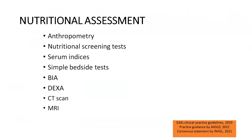Coming to the main part — nutritional assessment — we will deal with it in the following order: first, anthropometry, which includes simple tests; then nutritional screening tests; then serum indices; then simple bedside tests for assessment of malnutrition, sarcopenia, and frailty; and then some advanced investigations like bioimpedance analysis, DEXA scan, CT and MRI, which can help assess muscle mass.